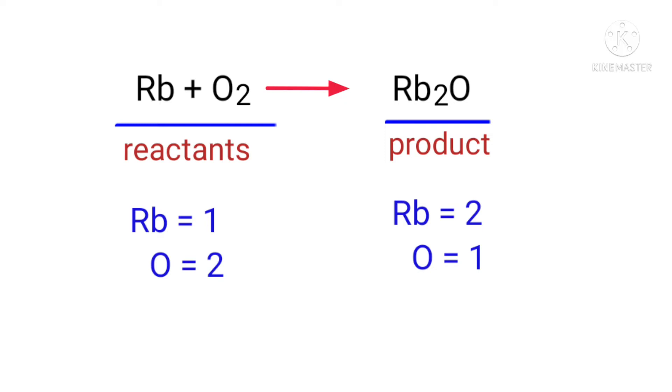In this equation we need to balance the Oxygen atoms first. To do this we need to put a coefficient of 2 in front of Rb2O. The Oxygen atoms are balanced.